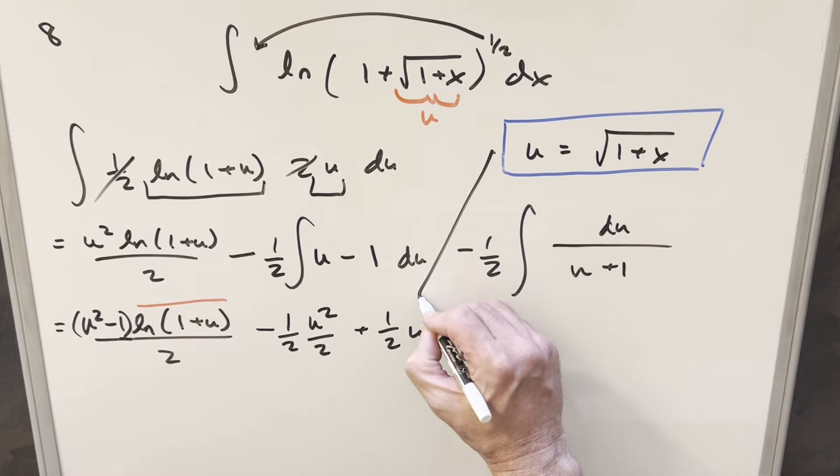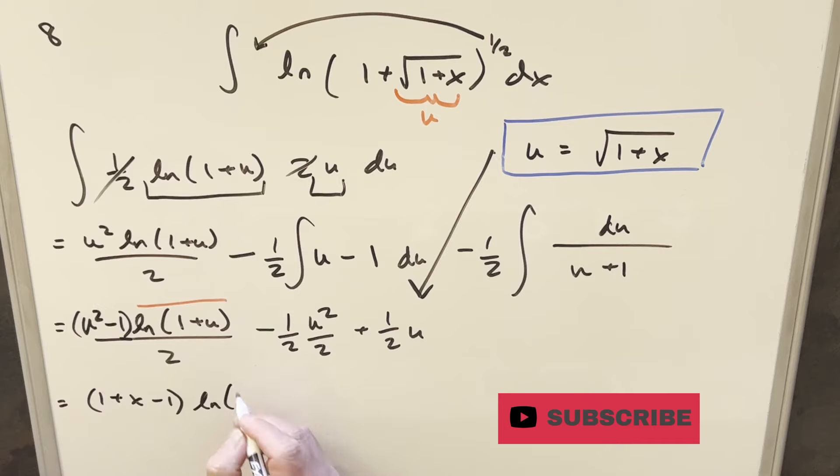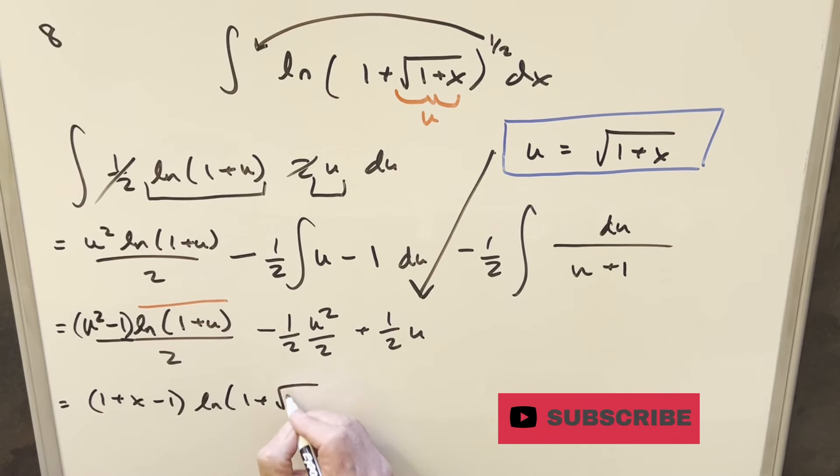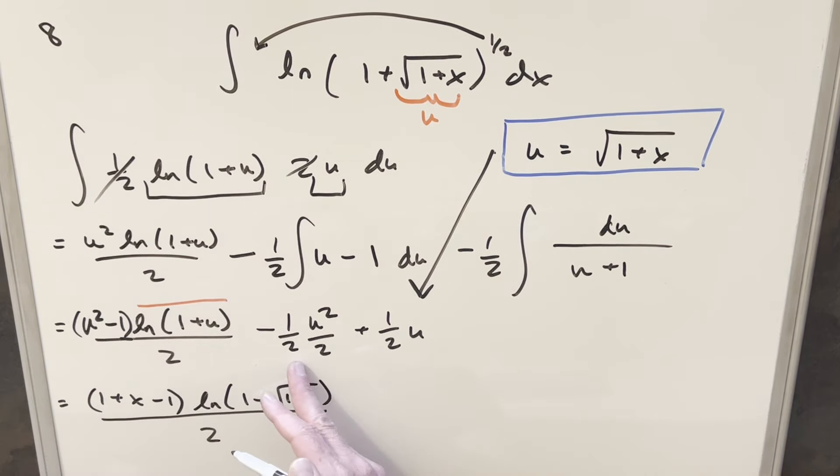And now I think we're ready to back substitute with our u. So first, u squared is going to be, just drop the square root. We're going to have 1 plus x minus 1 here. Natural log 1 plus our u, which is going to be square root of 1 plus x. Here, I'll combine minus 1 half times 1 half and write this as minus 1 fourth. And then again, squaring this is going to be 1 plus x. And then plus 1 half is going to be half square root of 1 plus x. Then just notice I can cancel a 1 with a minus 1 here. That's just a 0. We're left with this x here.